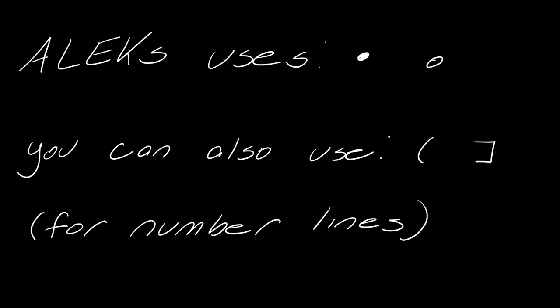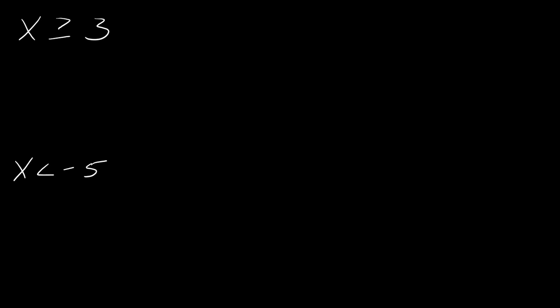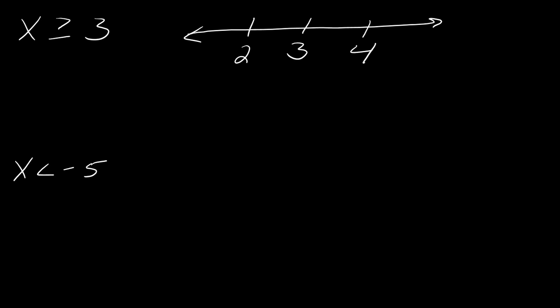Let's talk about how to make a number line that represents x is greater than or equal to 3. You're going to set up a number line and center it at whatever number you need — in this case, 3 — and draw one number on the left and one on the right. This symbol doesn't look like an L, so this has to be the greater than. Numbers greater than 3 go to the right.